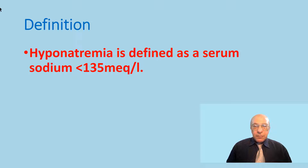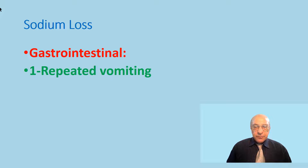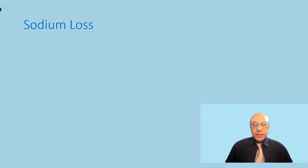Generally, we divide the causes of hyponatremia into very big categories. The first one is due to sodium loss, which can be through the gastrointestinal tract, like in cases of persistent vomiting, gastric aspiration, or persistent diarrhea.